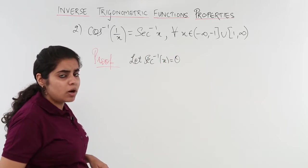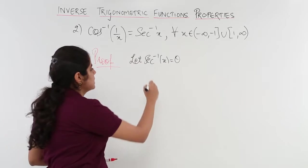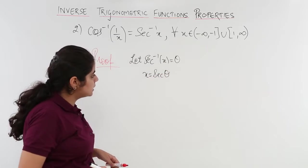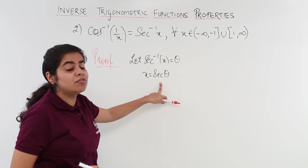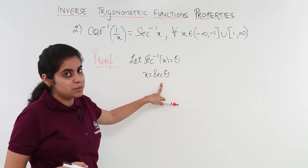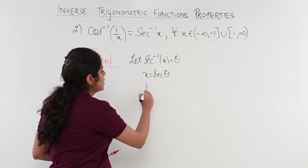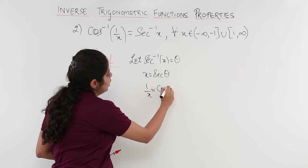Now x will be what? x will be secant goes that side, x is equal to secant theta. Secant is the reciprocal of cos. So cos is the reciprocal of secant, 1 by x is the reciprocal of x. So it becomes 1 by x is equal to cos theta.